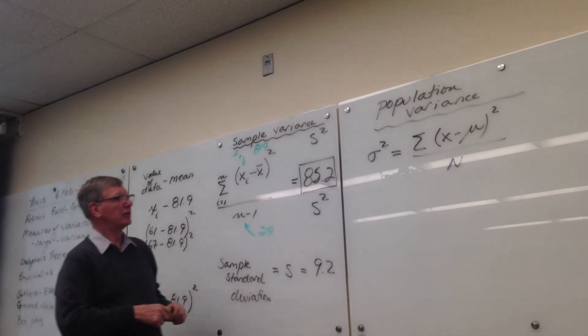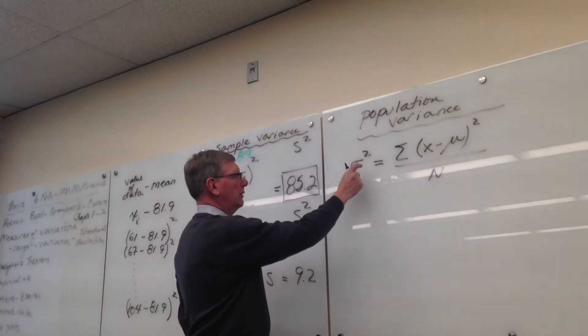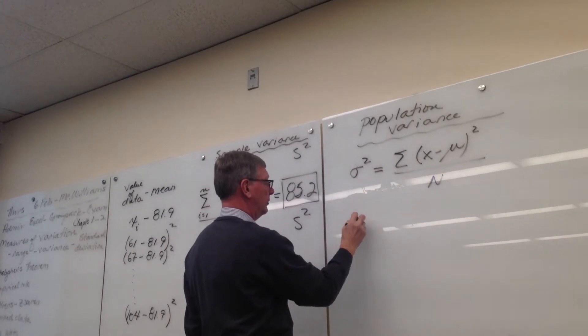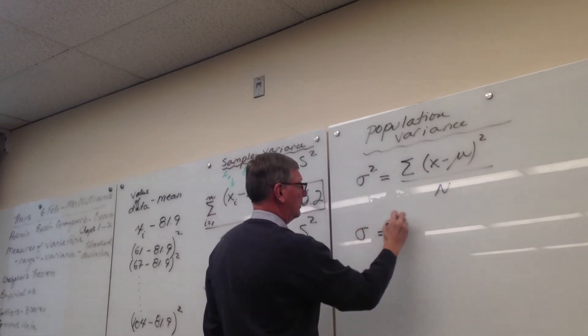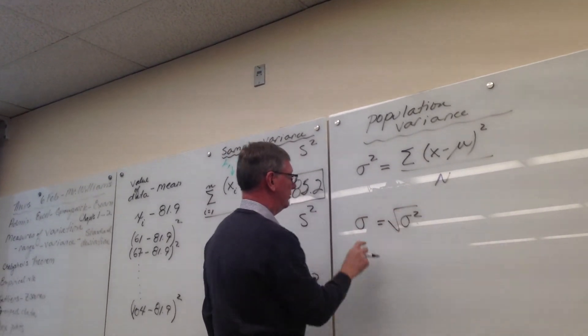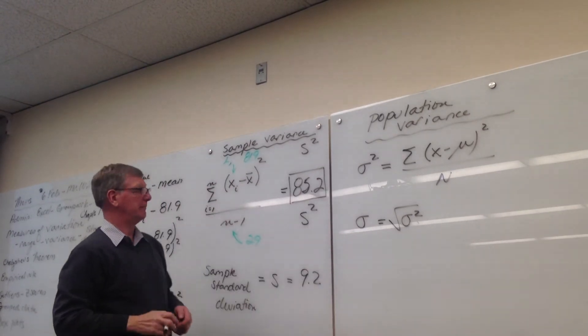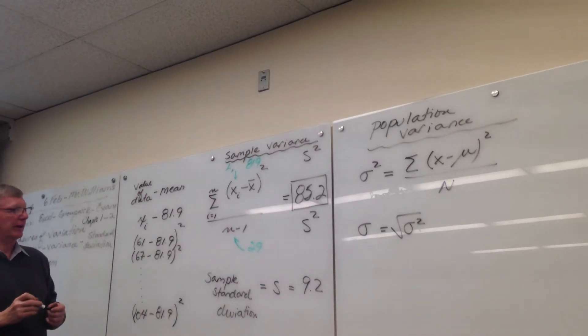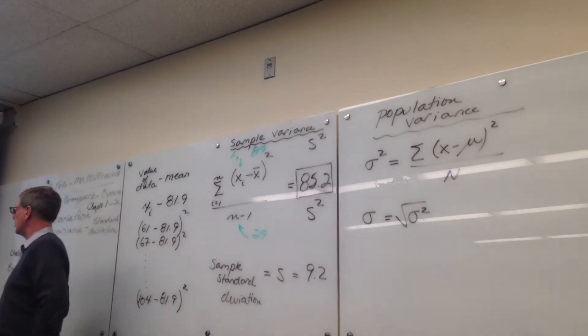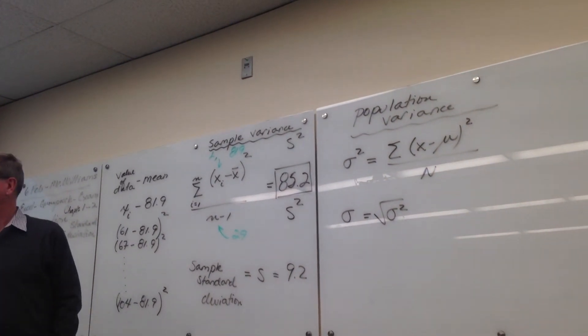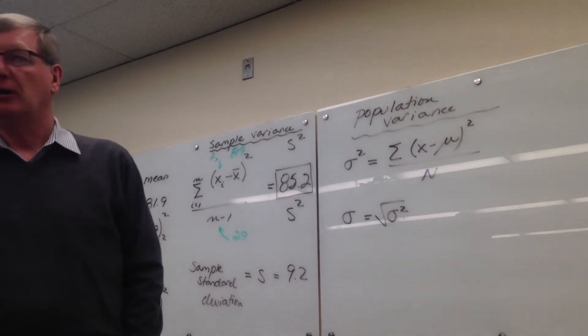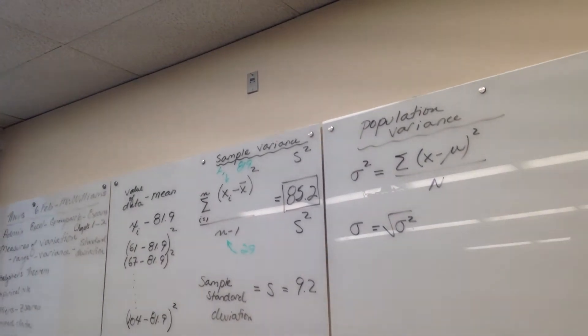If we knew the population in total, we would have no mystery, and this would be a population standard deviation. Most of the time, we're left over here to work with a sample, which we have, which is a 30 data point. Questions on how to figure out the sample standard deviation and sample variance?